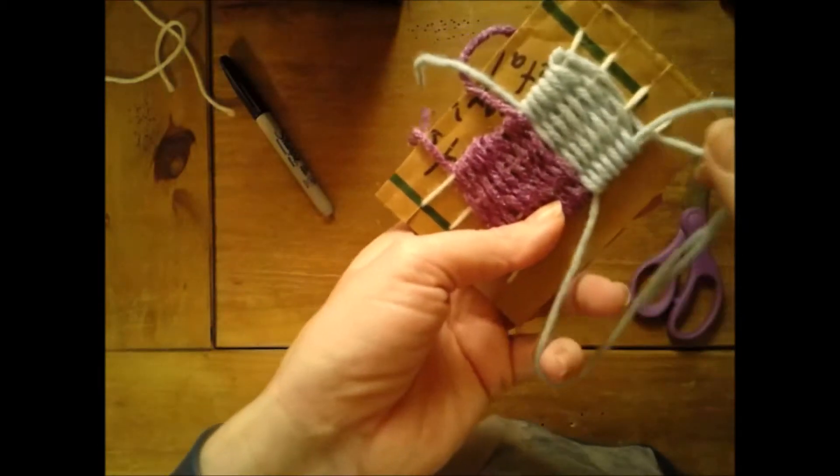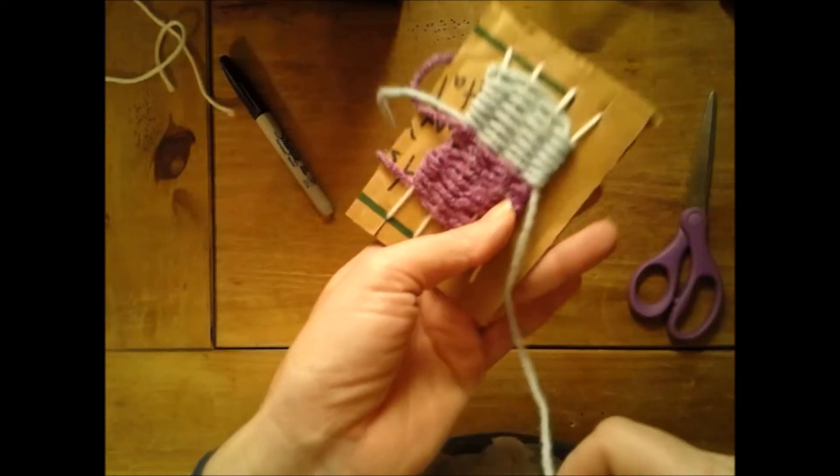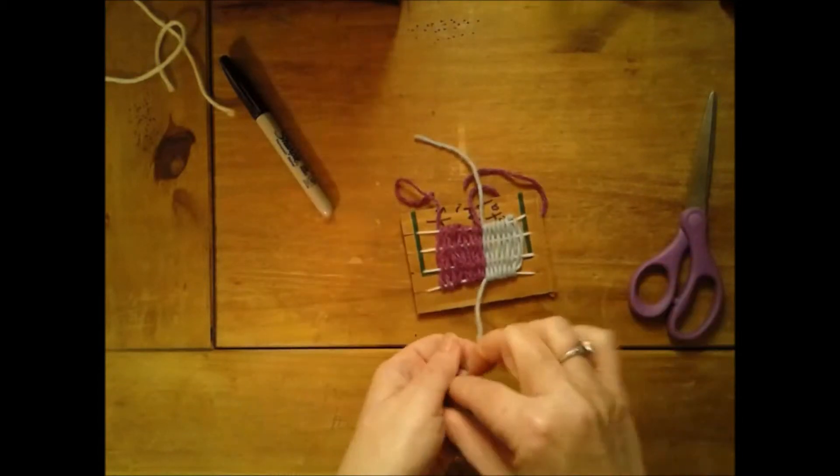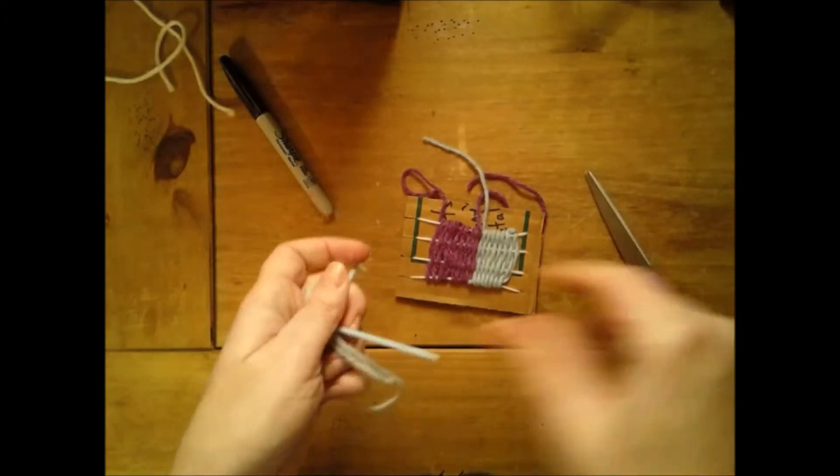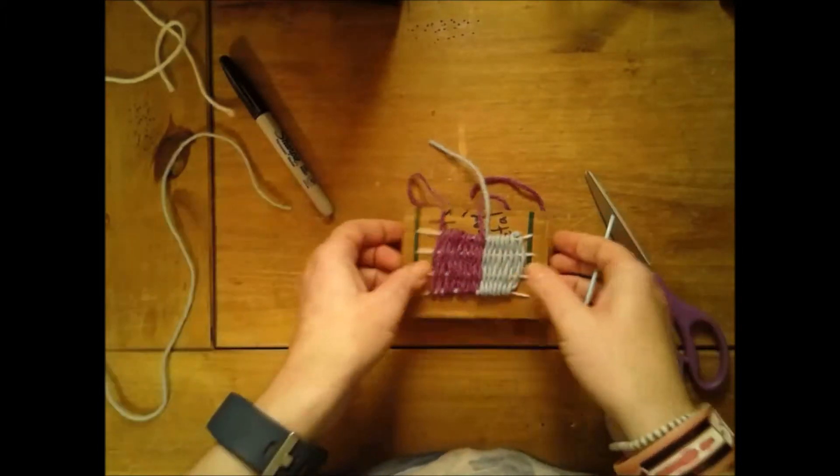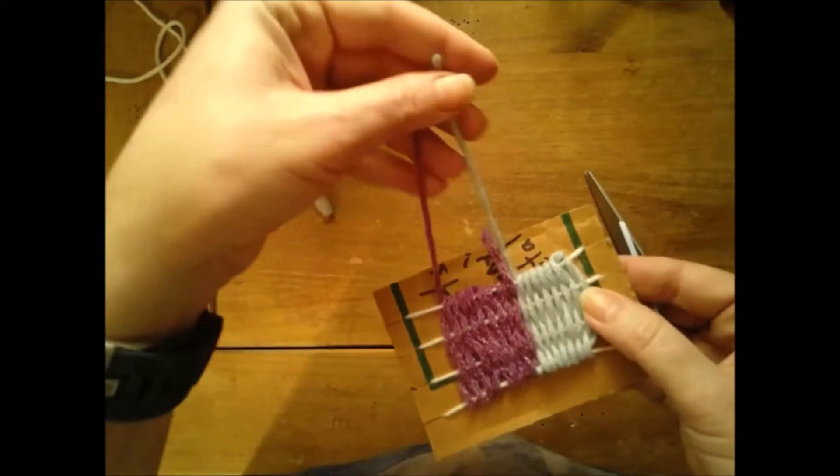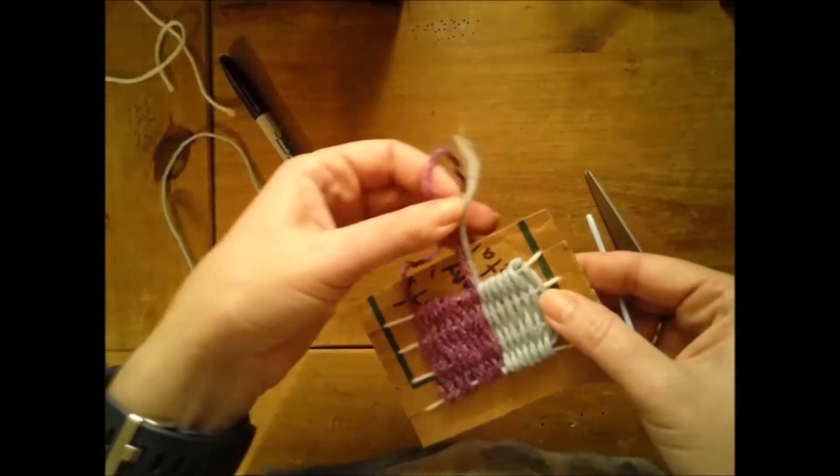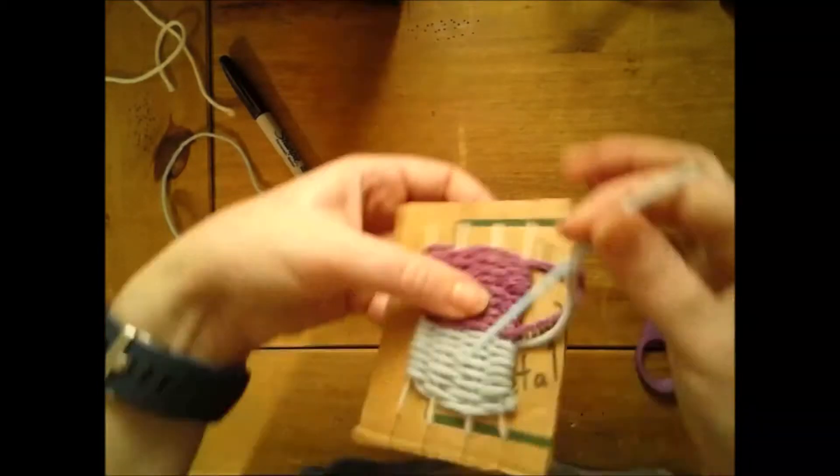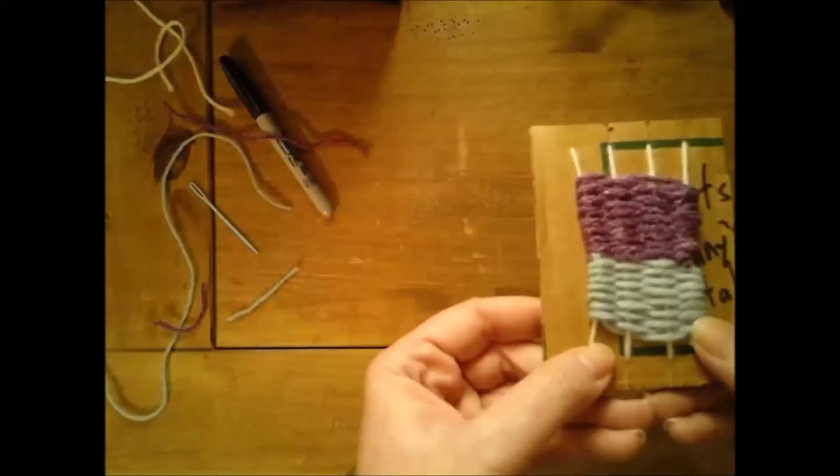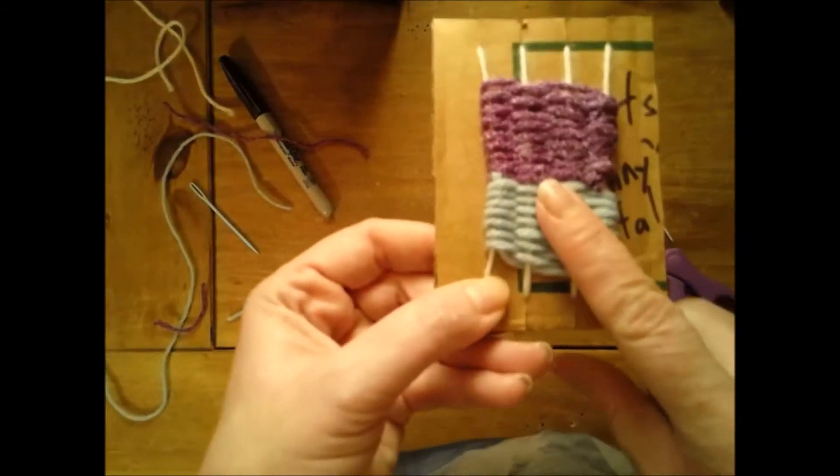Now if you forget this step and you don't do it, your weaving is going to fall apart, so this is a pretty important step not to forget. And now I'm going to do the same thing with all of these. All of these need to be tucked in so that they don't fall out—all my tails tucked into the sides.